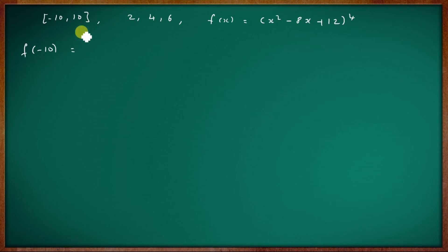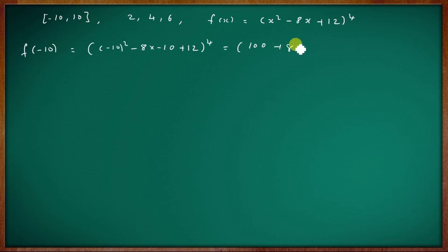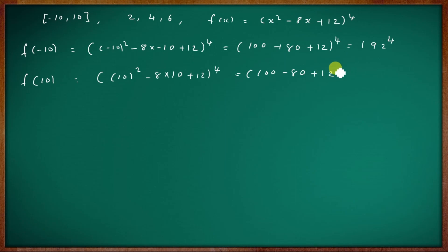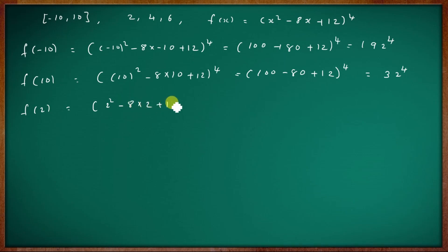Compute f(-10) = ((-10)² - 8(-10) + 12)⁴ = (100 + 80 + 12)⁴ = 192⁴. Compute f(10) = (10² - 8(10) + 12)⁴ = (100 - 80 + 12)⁴ = 32⁴. Compute f(2) = (4 - 16 + 12)⁴ = 0⁴ = 0. Compute f(4) = (16 - 32 + 12)⁴ = (-4)⁴ = 256. Compute f(6) = (36 - 48 + 12)⁴ = 0⁴ = 0.